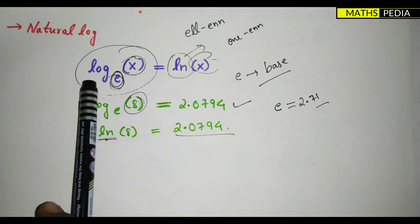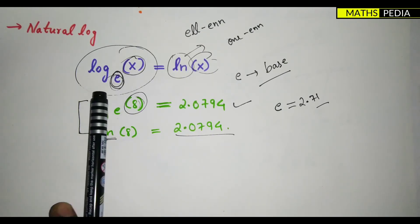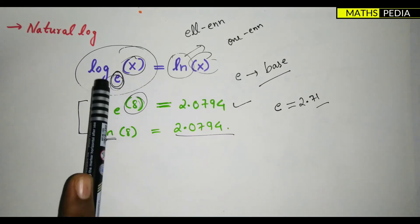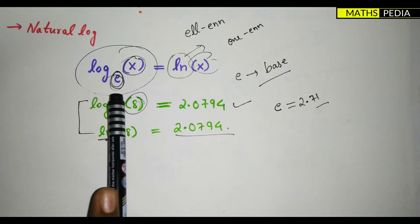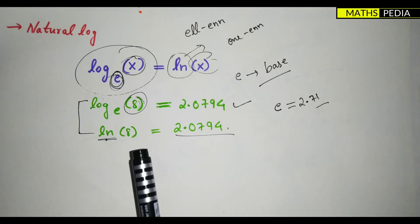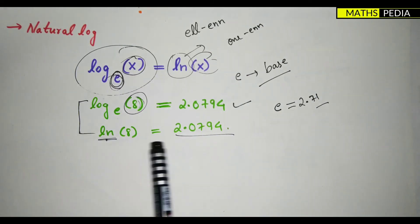So always remember this term: this is natural log and this is nothing but the common log. This is natural, this is common. The only difference comes in terms of the base. This has a fixed base. It depends on the base difference. If the base is not given for the log, we will take it as 10. This I said earlier also. So basically we understood the term ln.